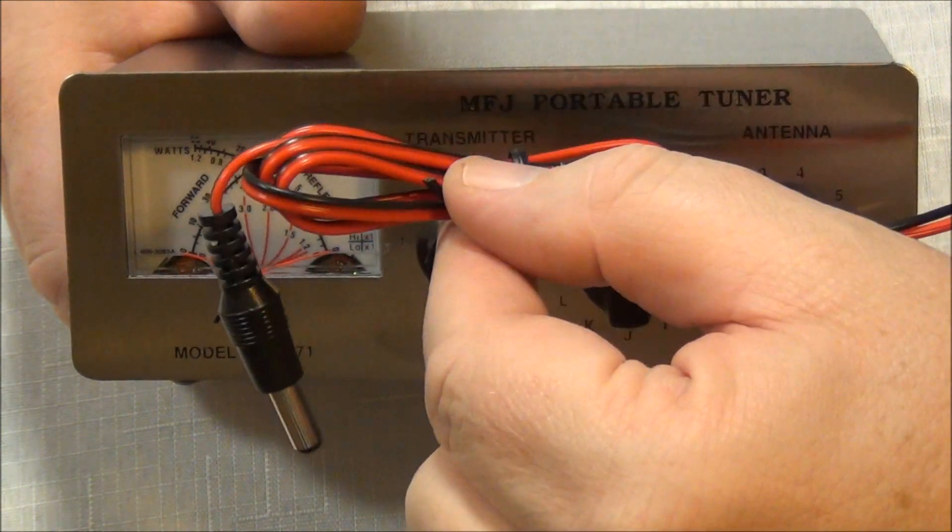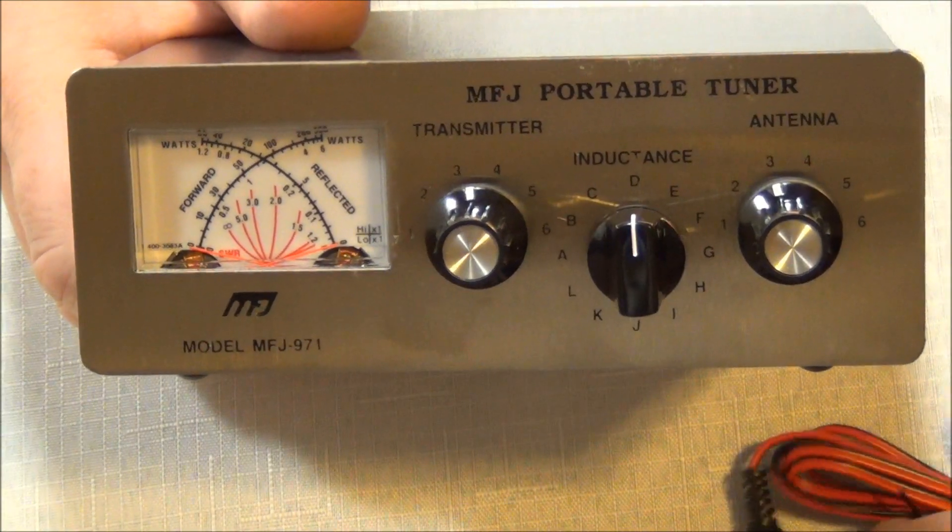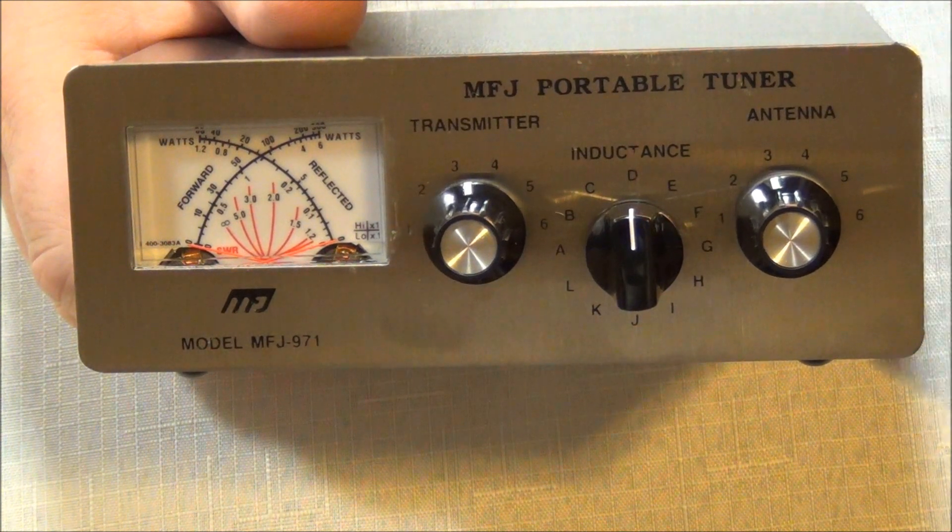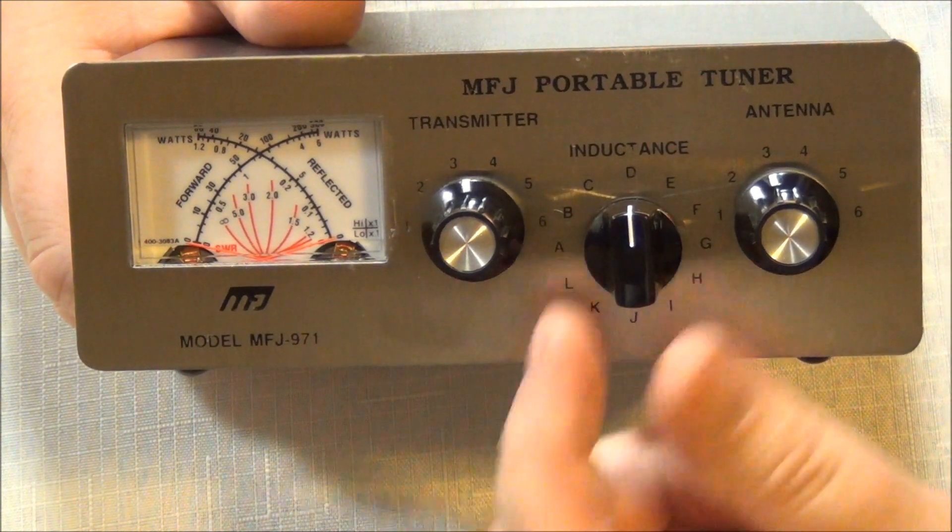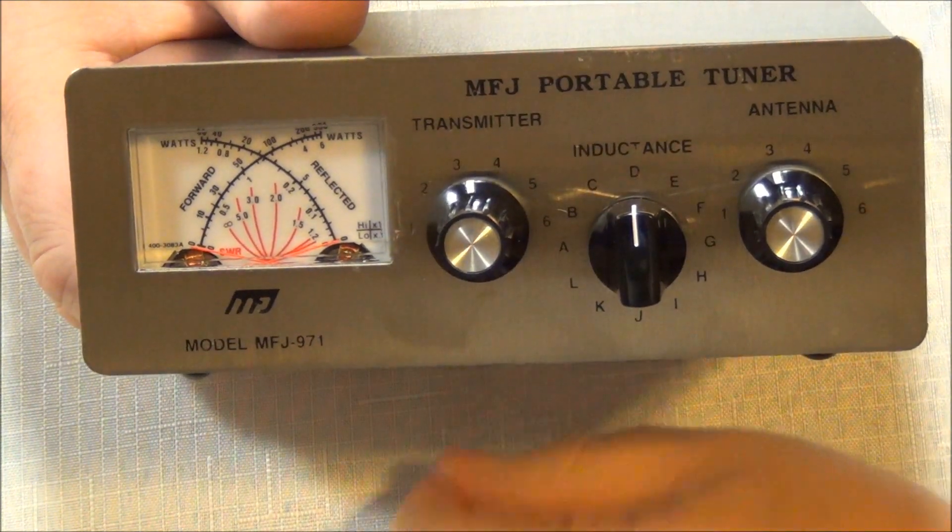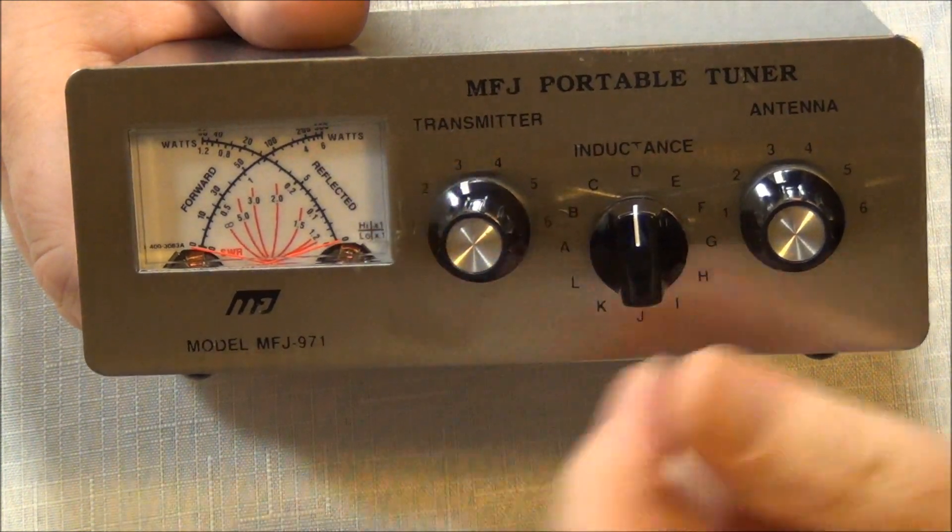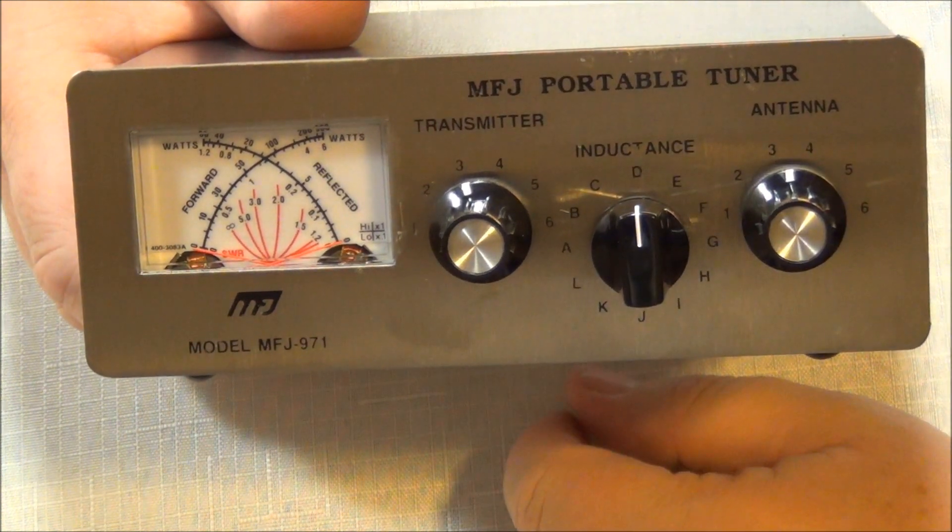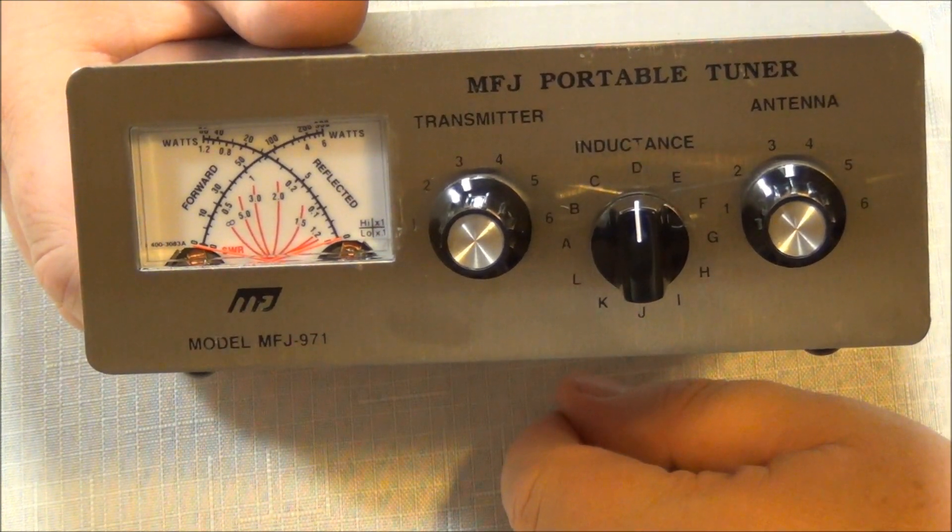This is a power cable for the backlight on the S meter. The tuner has an inductance switch, capacitance on the transmitter side, and capacitance on the antenna side. Pretty straightforward little tuner.